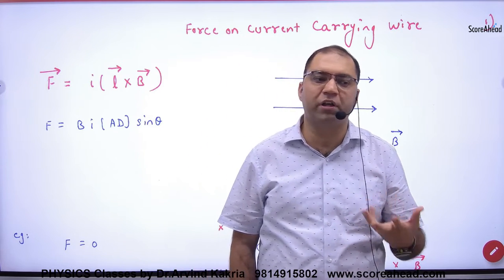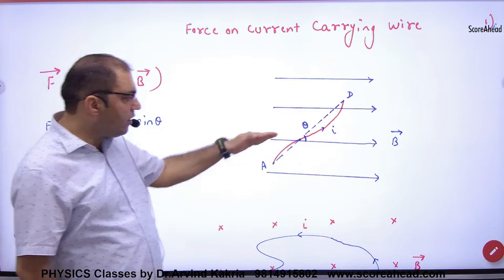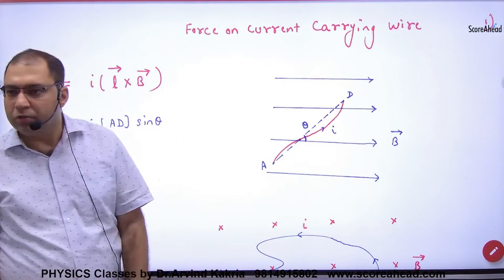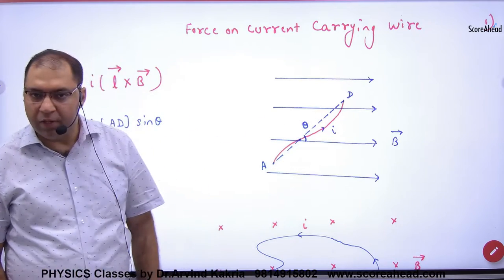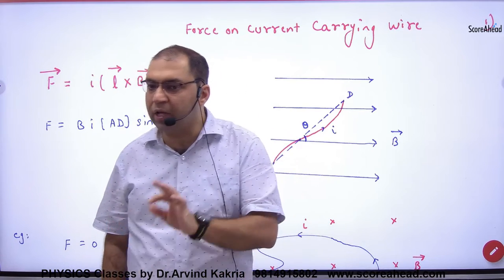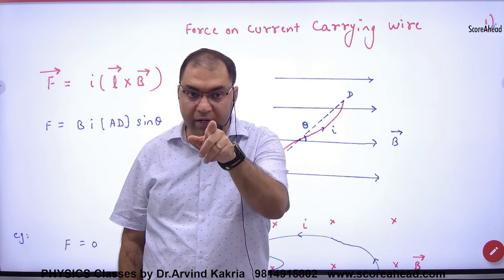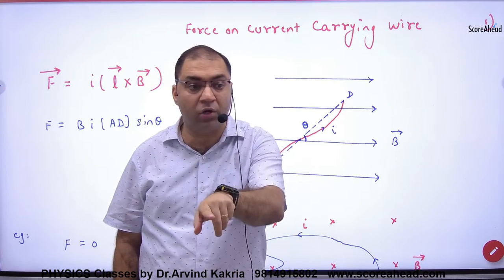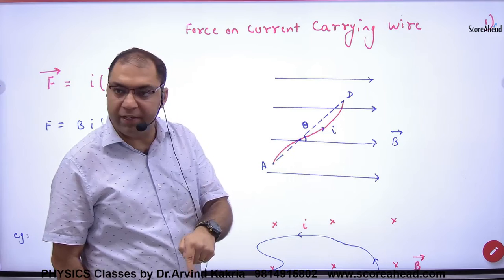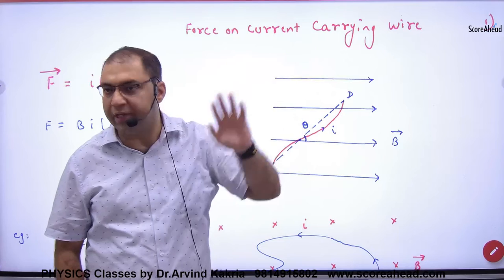In the formula, we take the length as a vector L. The formula for force is I into L-cross-B, where L vector is a displacement vector, not a distance. So you do not take the path length — you take the displacement, which means you join the initial and final points.